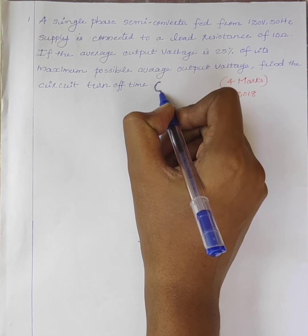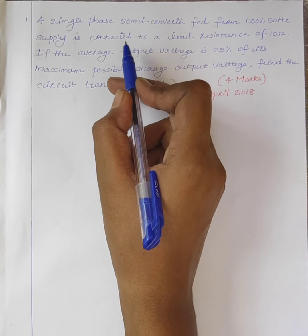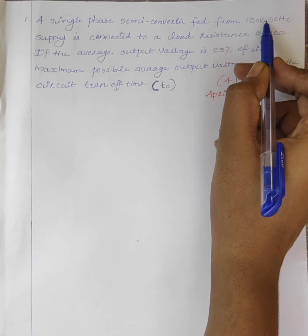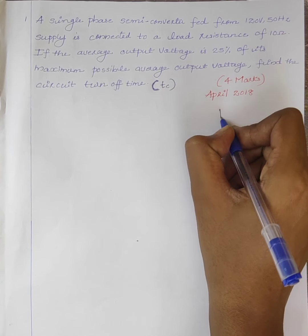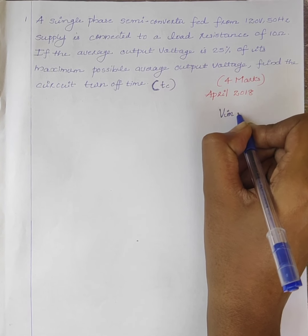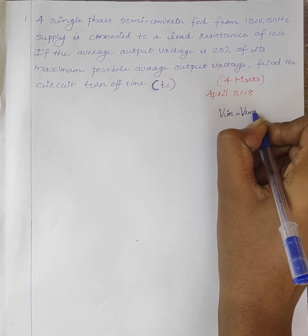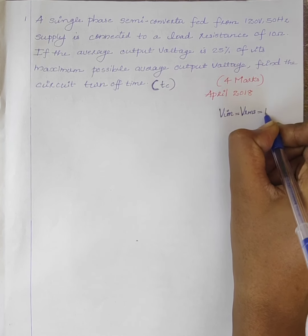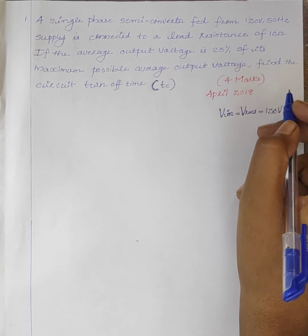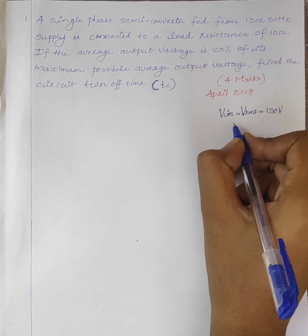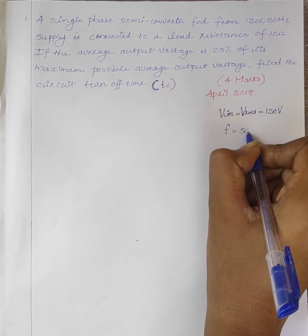Circuit turnoff time is Tc. From the question, it is given that the input voltage Vin, that is VRMS, is equal to 120V. And the frequency F is equal to 50Hz.